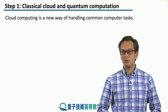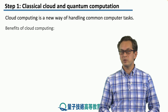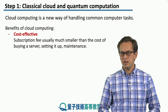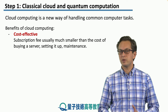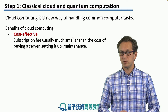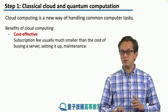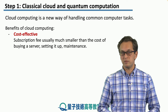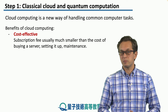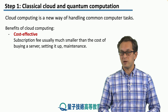Classical cloud computing is a new way of handling common computer tasks, and it comes with numerous benefits. The first one is cost-effectiveness. Imagine that you are a small business trying to set up remote storage on a server. First, you have to pay for the server, which is not cheap. Then you have to pay for the labor of setting it up, and also for maintenance. On the other hand, if you use the cloud, you just pay a simple subscription fee, which is quite often smaller than the actual price of setting up your own server.